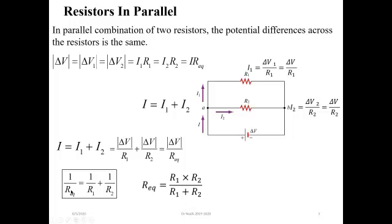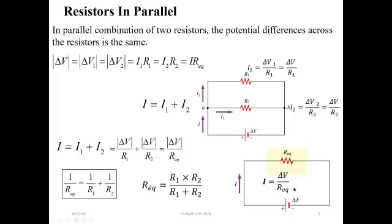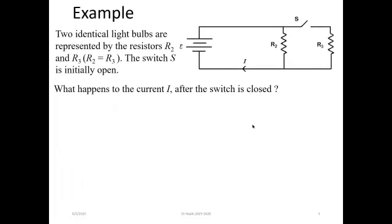For parallel connection, the equivalent resistance is R1 multiplied by R2 divided by R1 plus R2 — this is the main formula. Now we solve this example: we have a DC power supply and two identical light bulbs represented by resistors R2 and R3, both of which are equal in resistance.